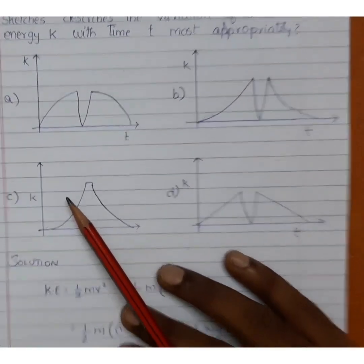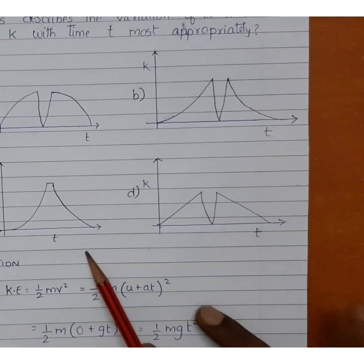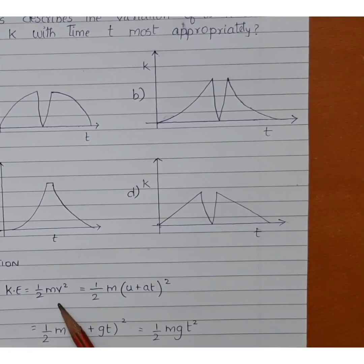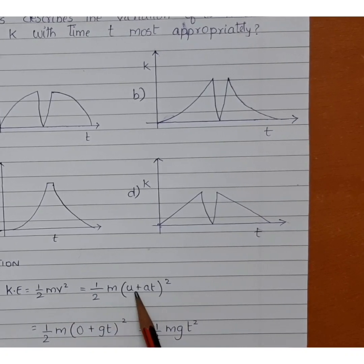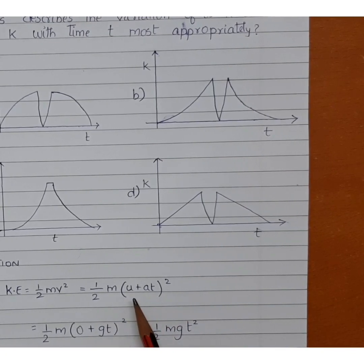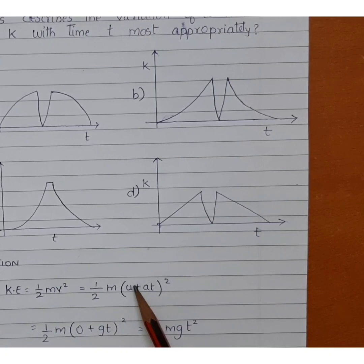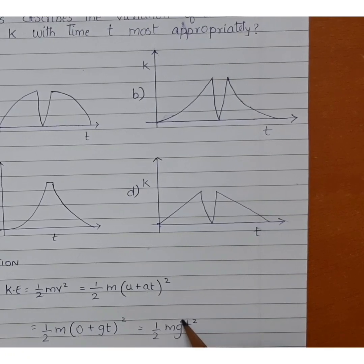So four options are given. Let us see how to approach this sum. We know that kinetic energy is nothing but half mv square. V is nothing but u plus at. So instead of v, I am substituting u plus at. So half m into u plus at the whole square. But it is given that the tennis ball is dropped. So if you are dropping freely, the initial velocity will become zero and the acceleration will be equal to plus g. So it becomes half m into zero plus gt the whole square. That is nothing but half m g square t square.